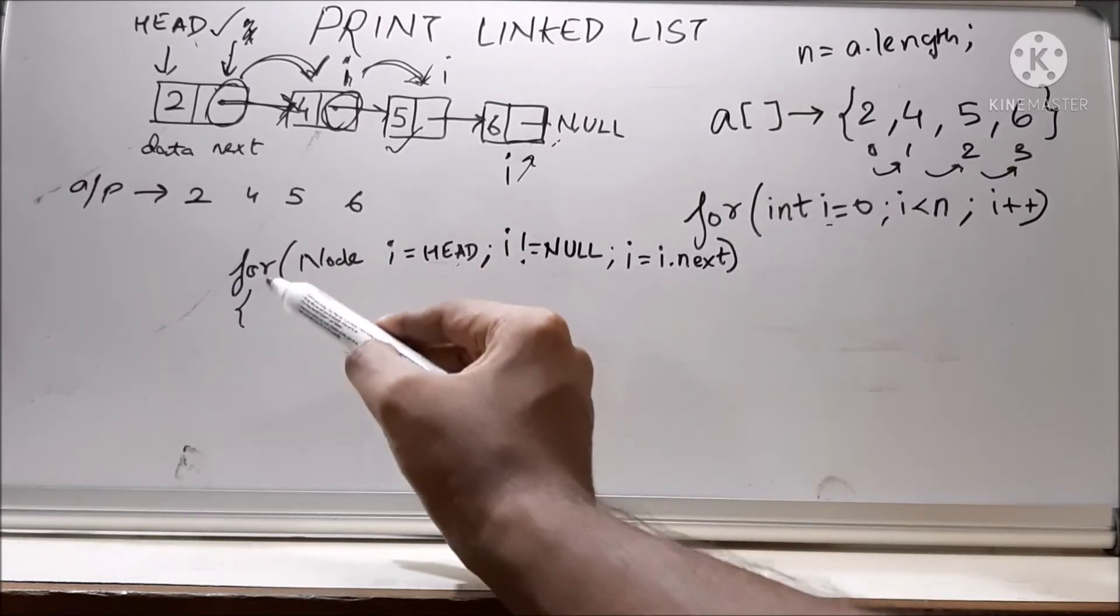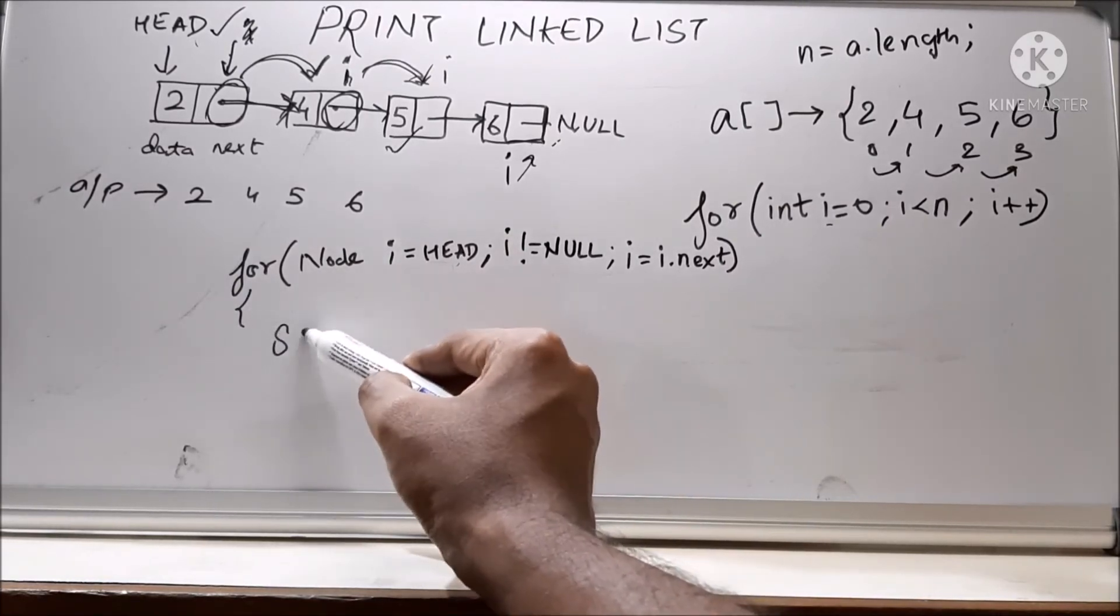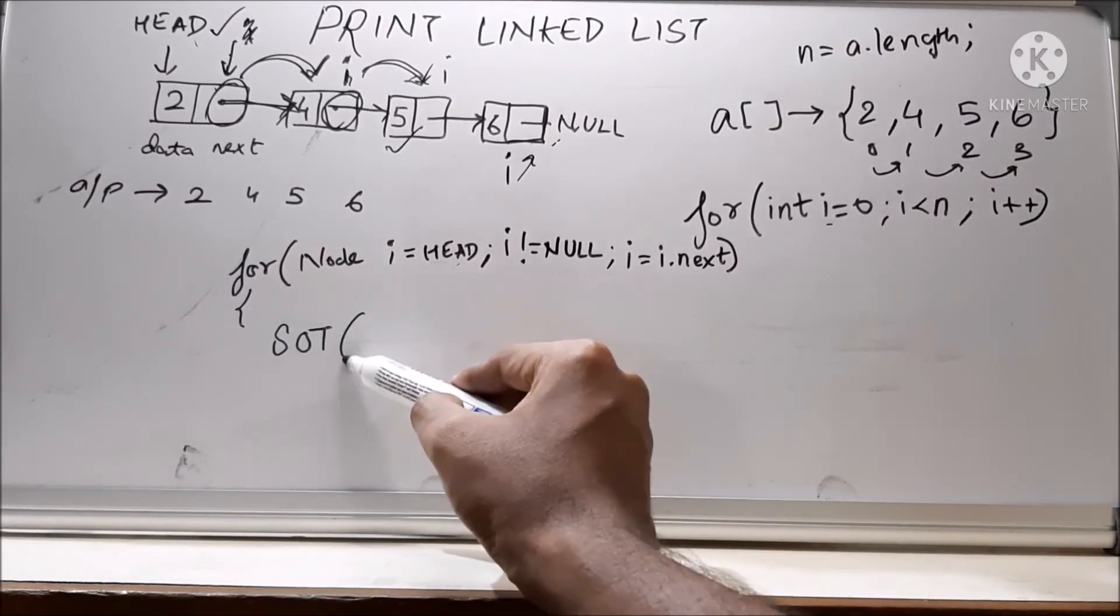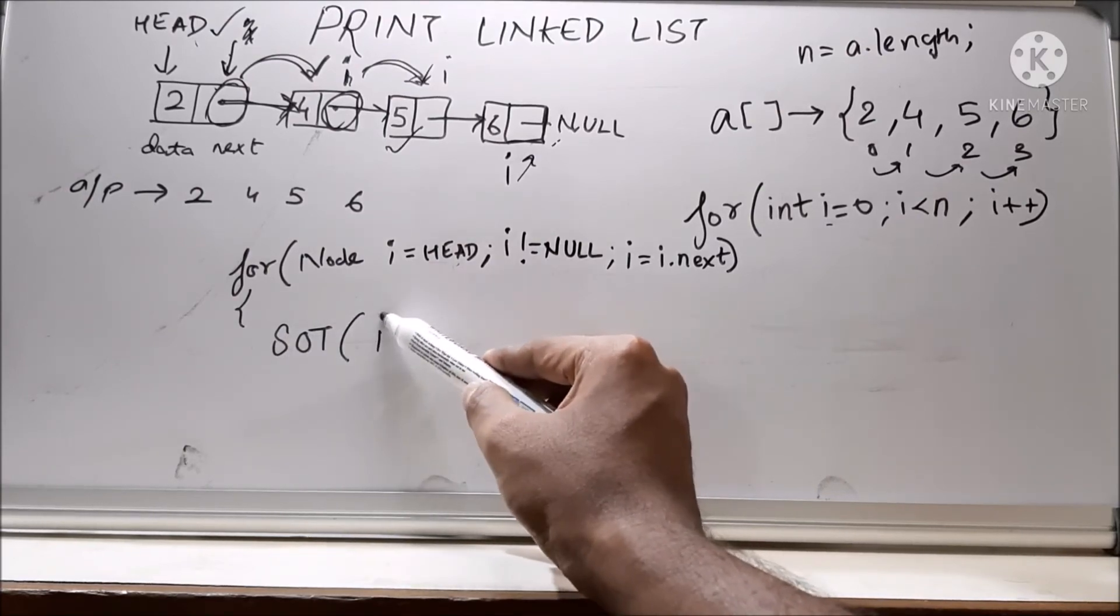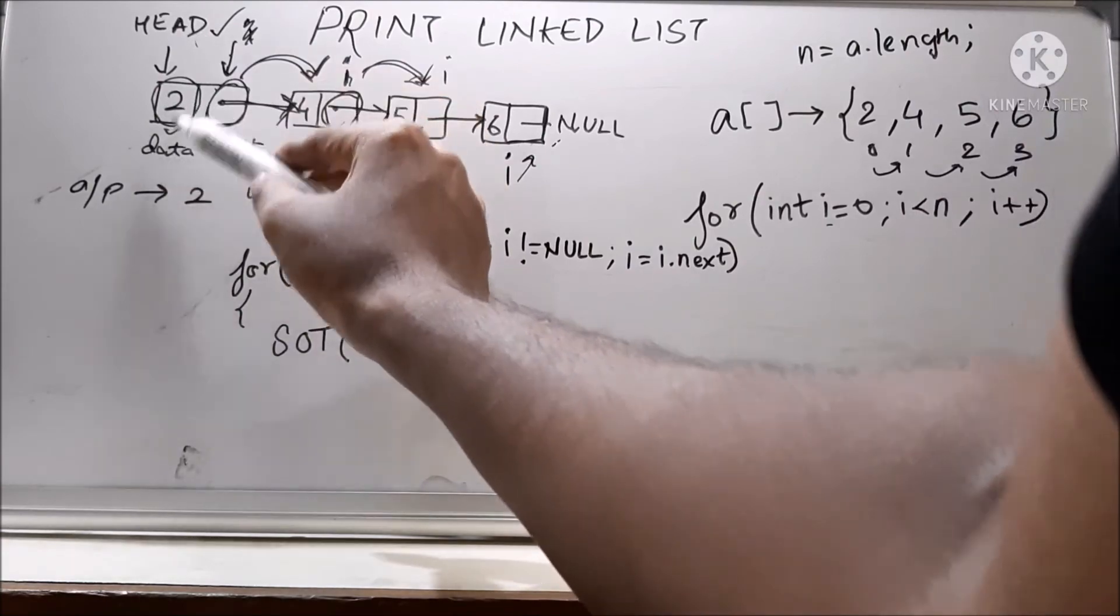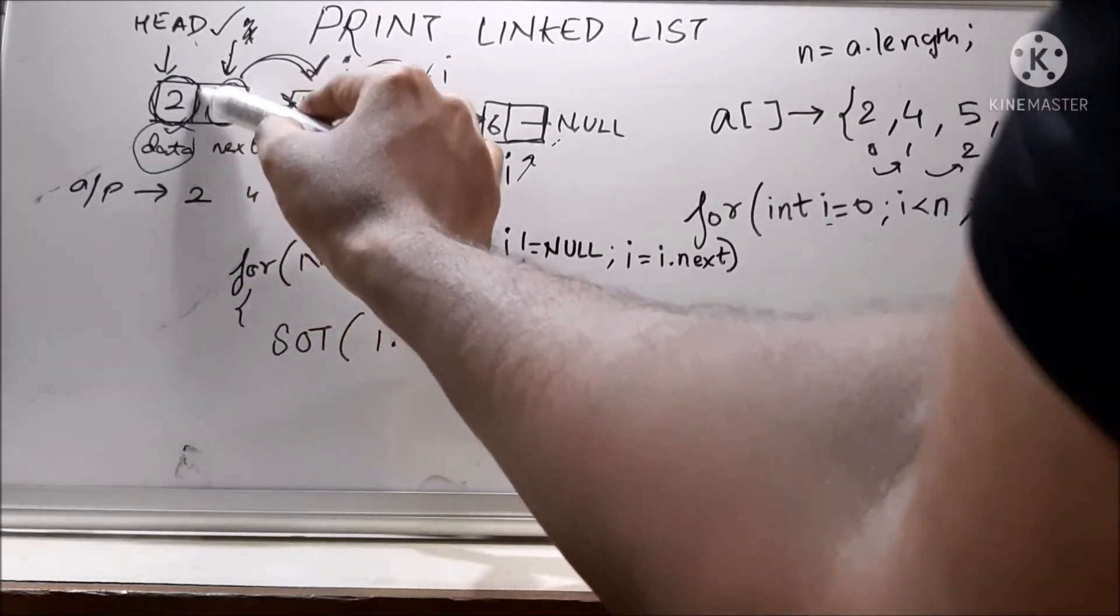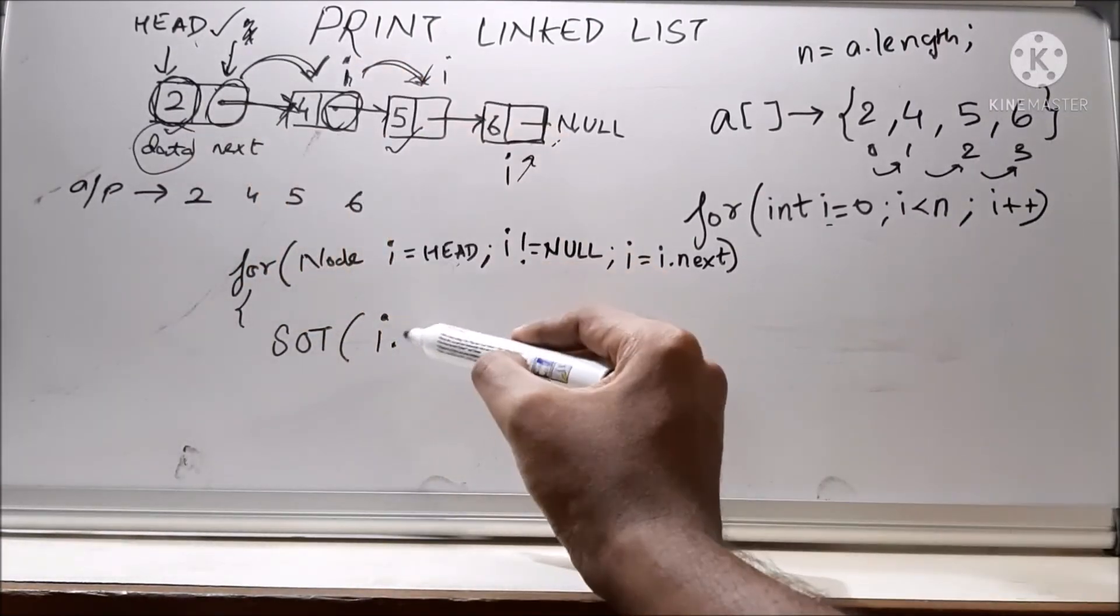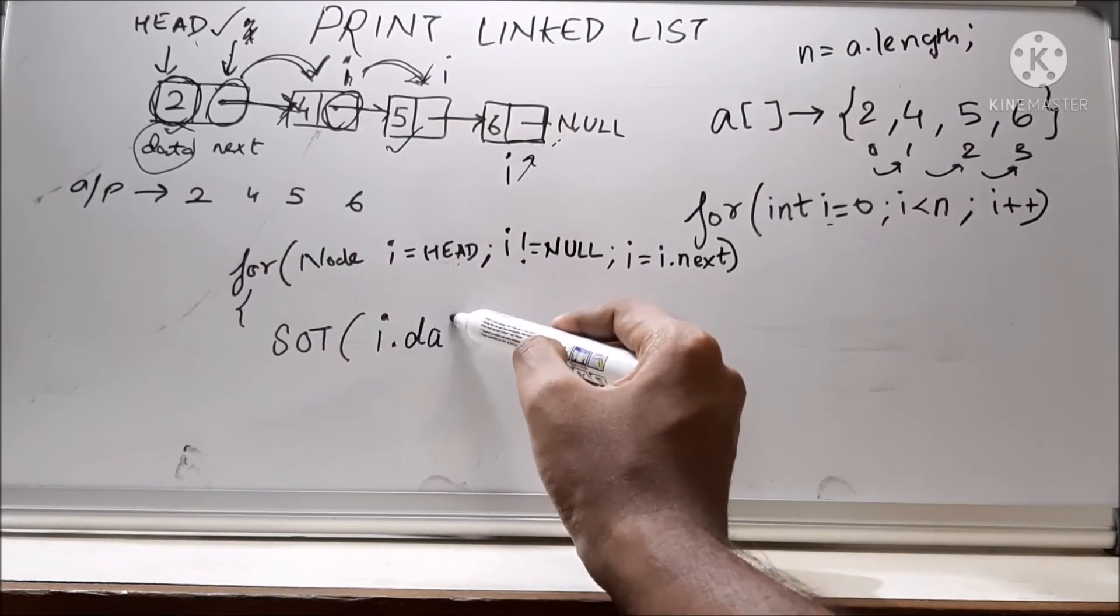And this is the for loop. So what we will do is we are going to print. So we will say sys out. We are going to print i dot data. You see that every node has a data part, right? The data has the values which we need to print. So I will just print i dot data.